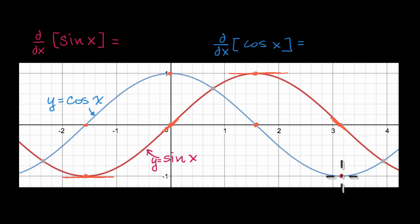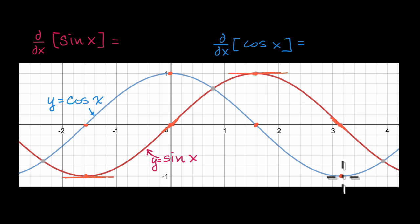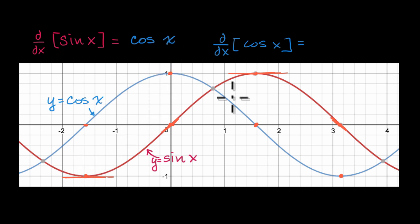So you're probably seeing something interesting emerge. Everywhere, while we're trying to plot the slope of the tangent line, it seems to coincide with y equals cosine of x. And it is indeed the case that the derivative of sine of x is equal to cosine of x. You can see that it makes sense not just at the points we tried, but even in the trends. If you look at sine of x here, the slope is one, but then it becomes less and less positive all the way until it becomes zero.